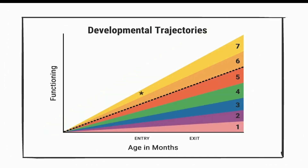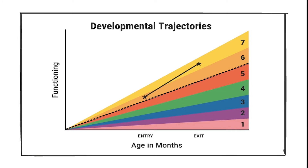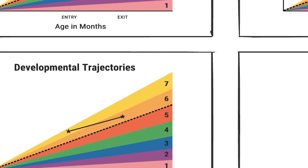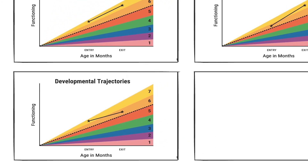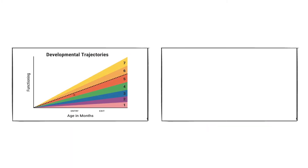A rating of 6 or 7 on the child outcome summary scale indicates the child is functioning like same-age peers. Children with ratings of 6 or 7 at both entry and exit are all counted in category E. A child who entered the program not functioning like same-age peers but caught up by the time she exited falls into category D.